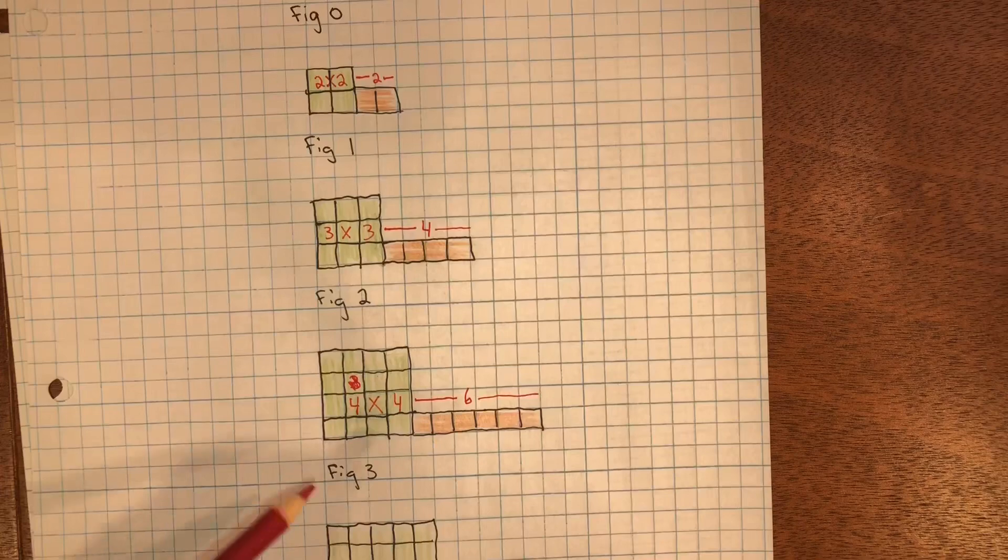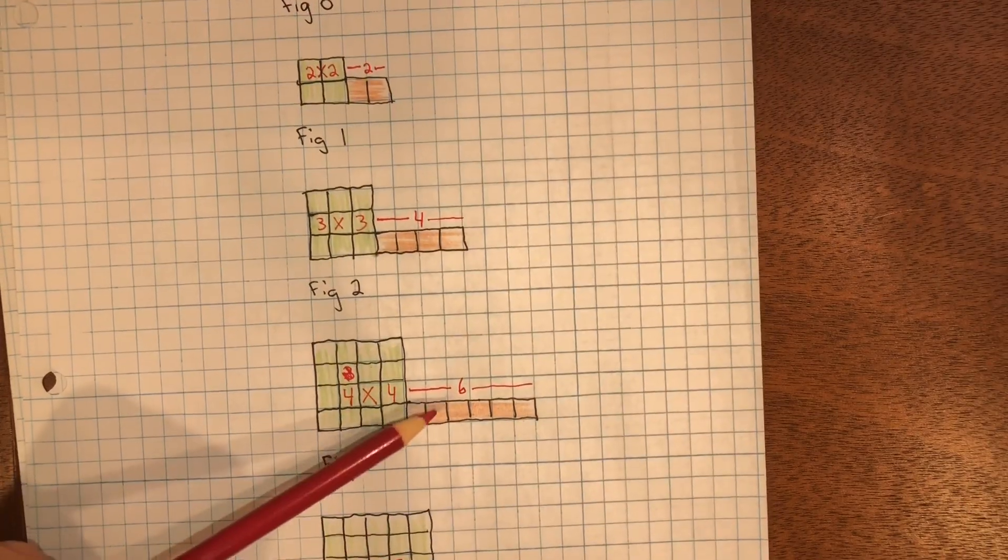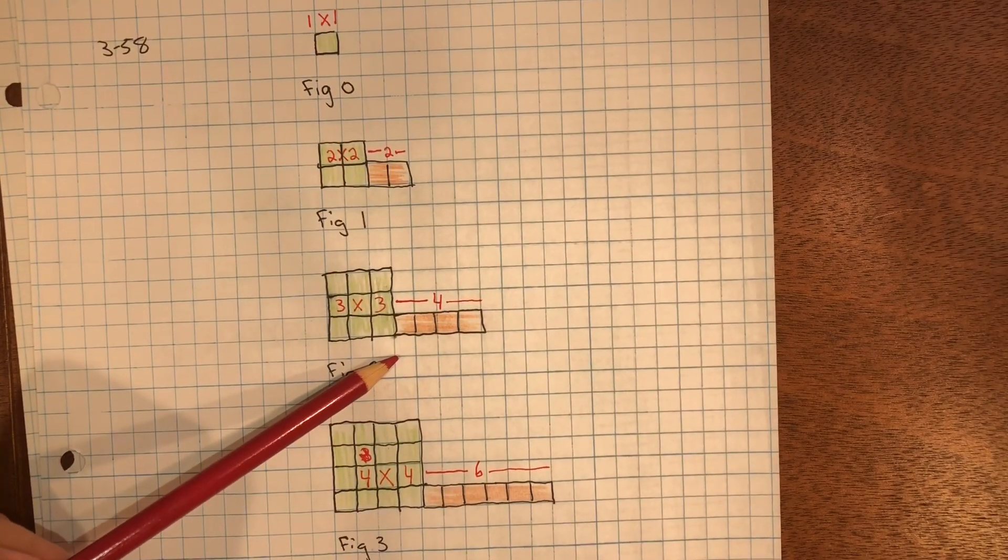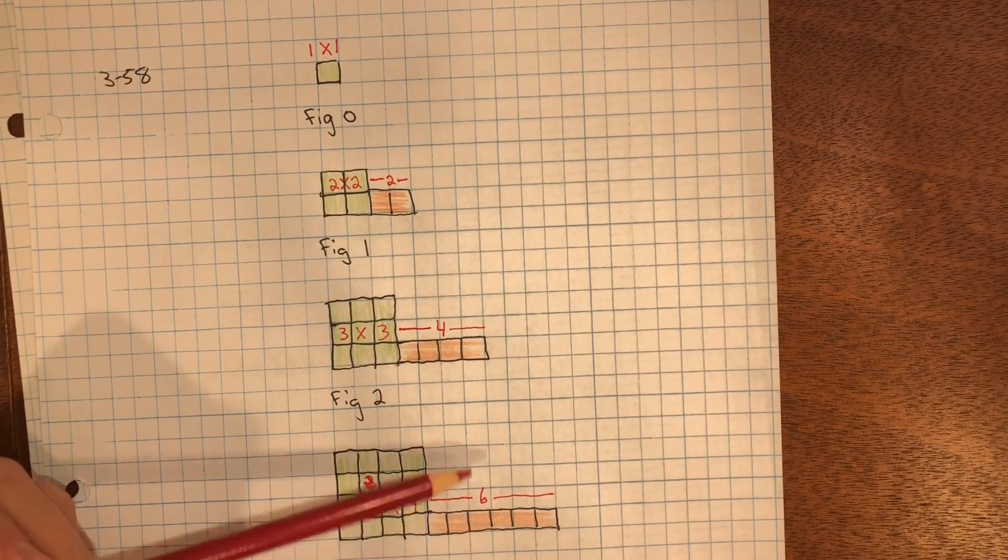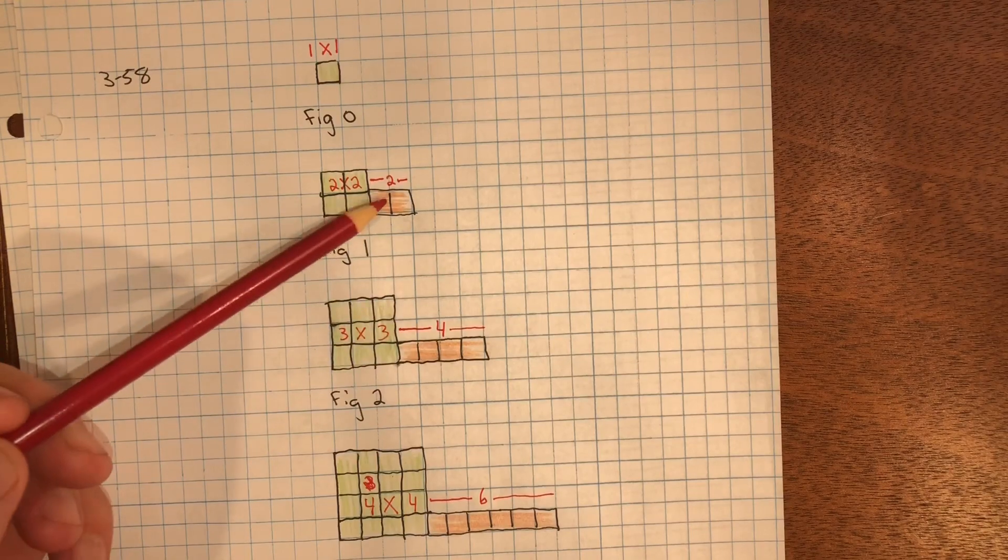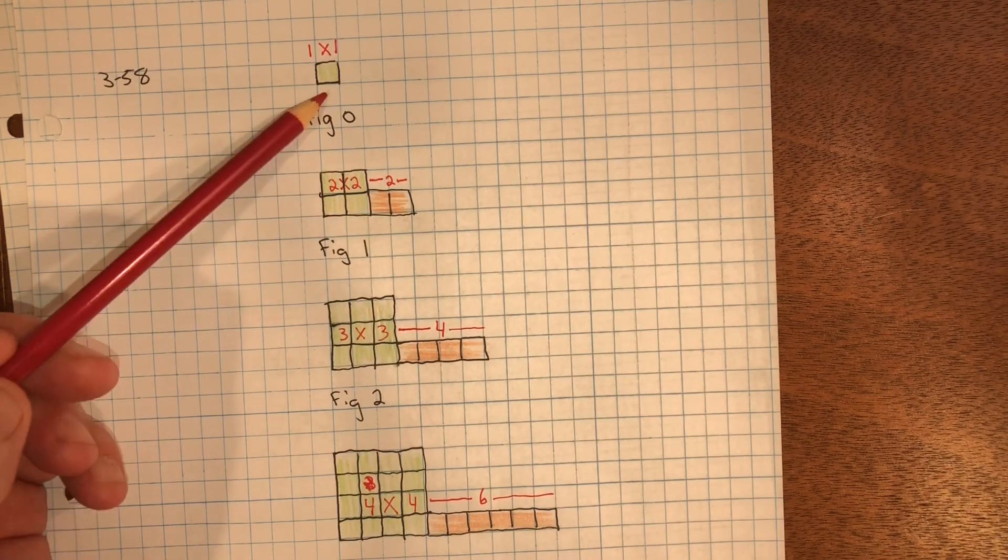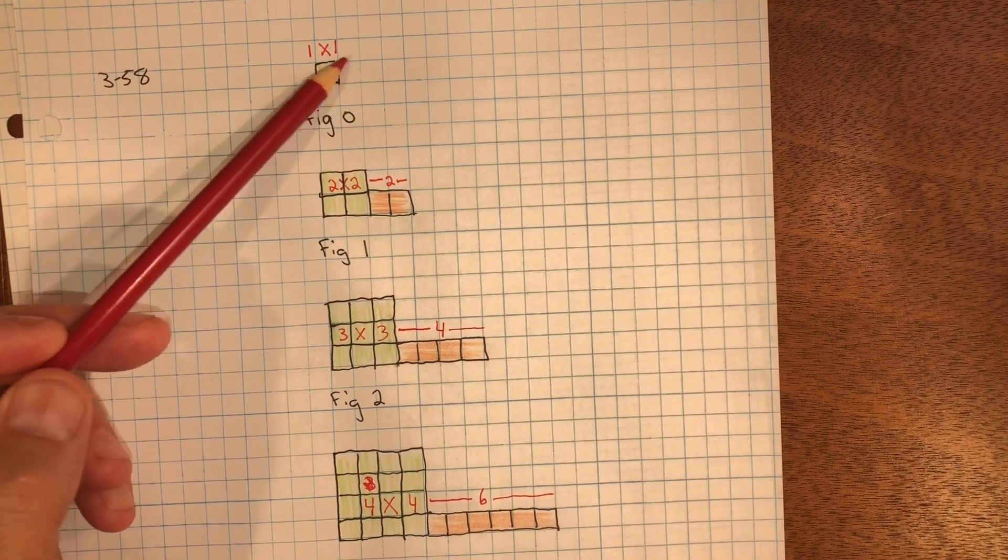And if I go back down, 6, 4, 2. You can see we're subtracting 2 each time. 6 minus 2 is 4, 4 minus 2 is 2, 2 minus 2 is 0. So we don't have any orange.